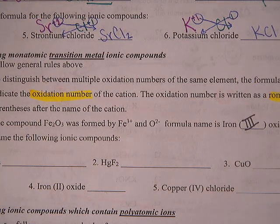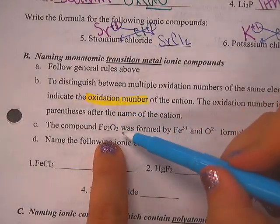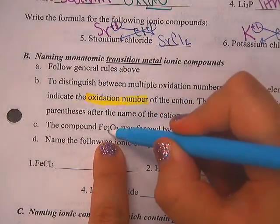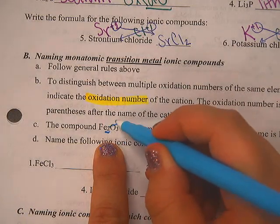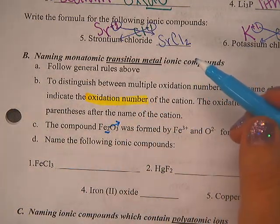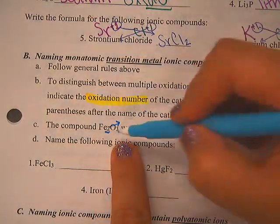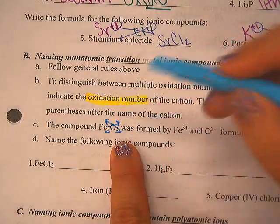The way that we can tell what the charge was originally is by basically undoing the crisscross. If I look at Fe₂O₃, the 2 on iron came from oxygen, which is consistent with what I know from the periodic table — oxygen has a minus 2 charge. That means the 3 came from iron.